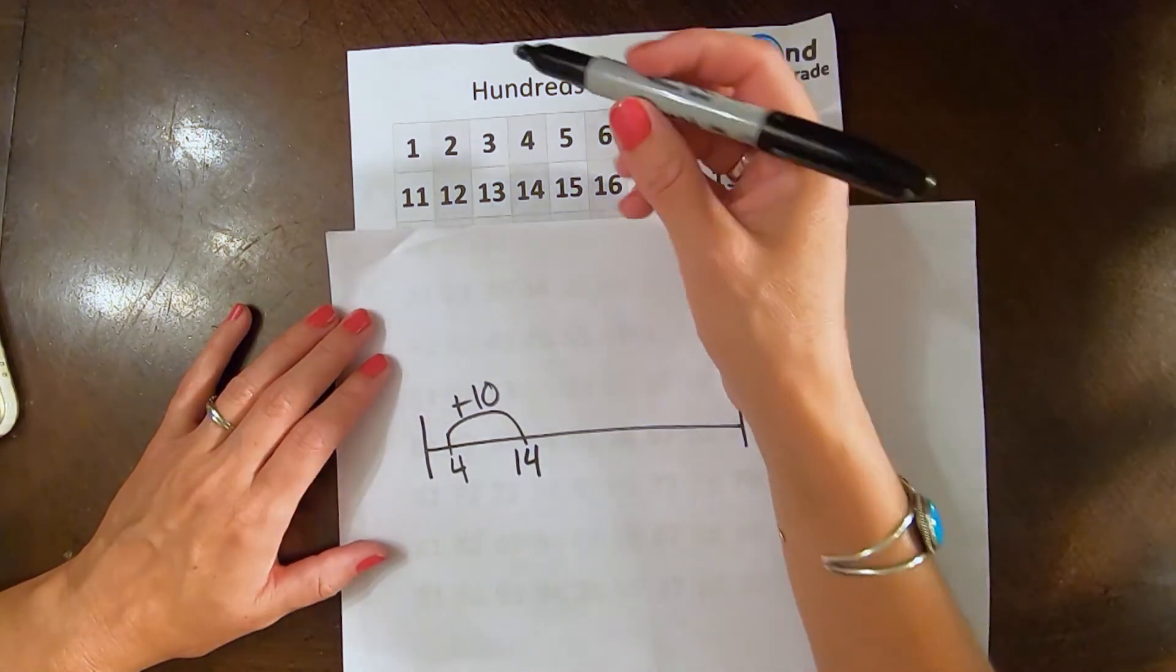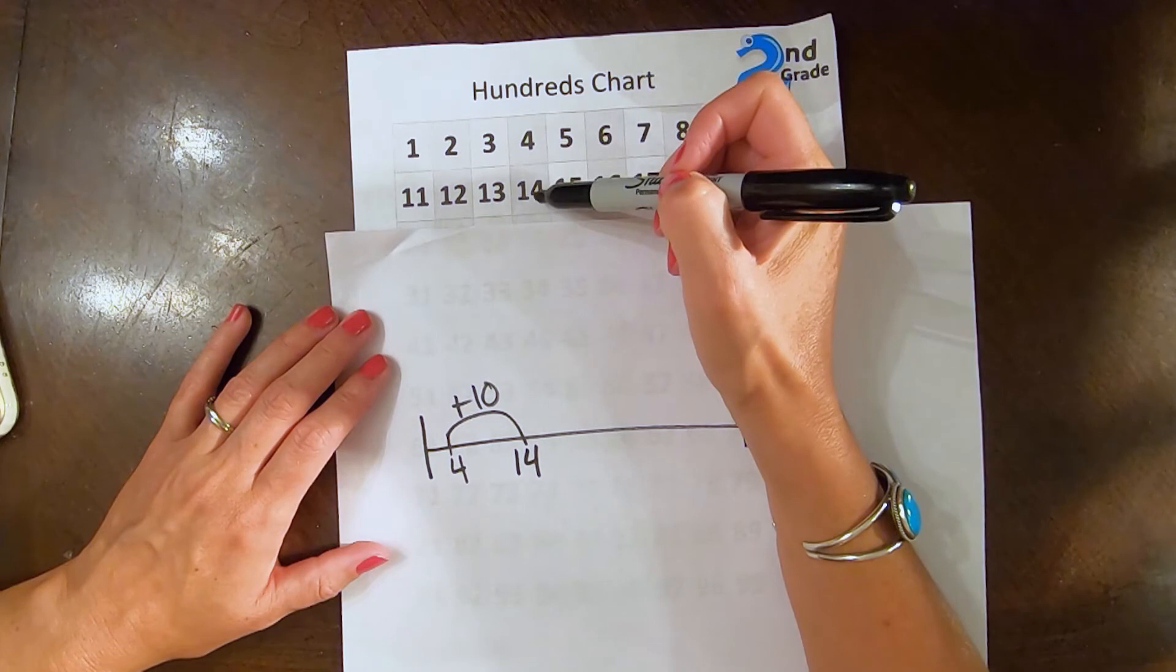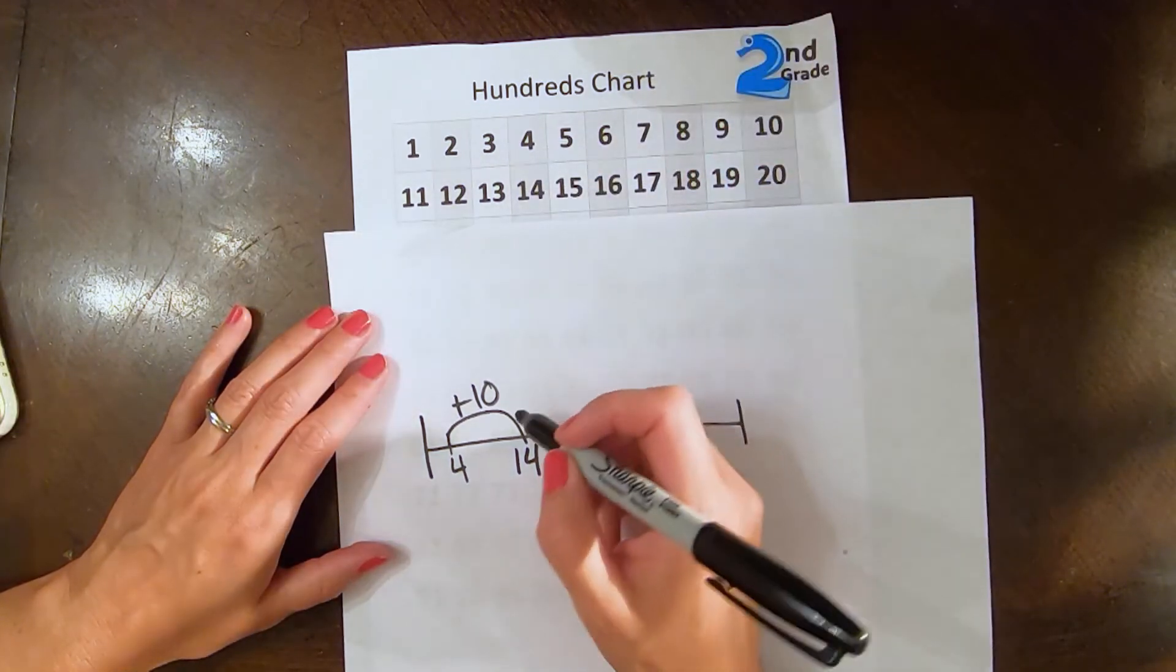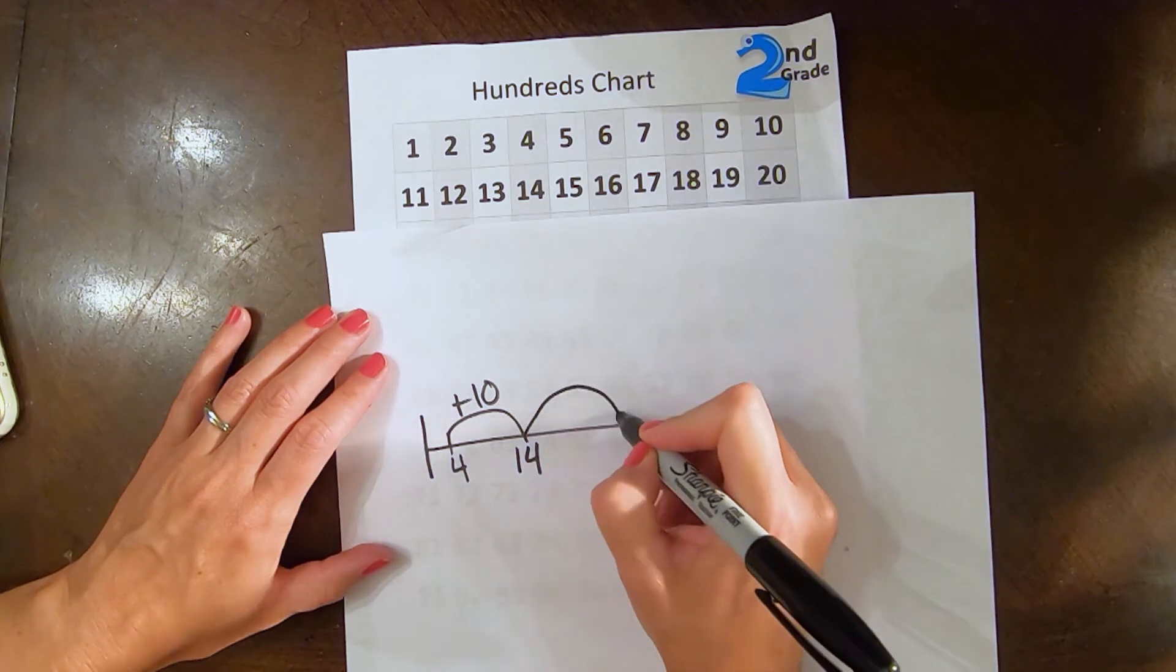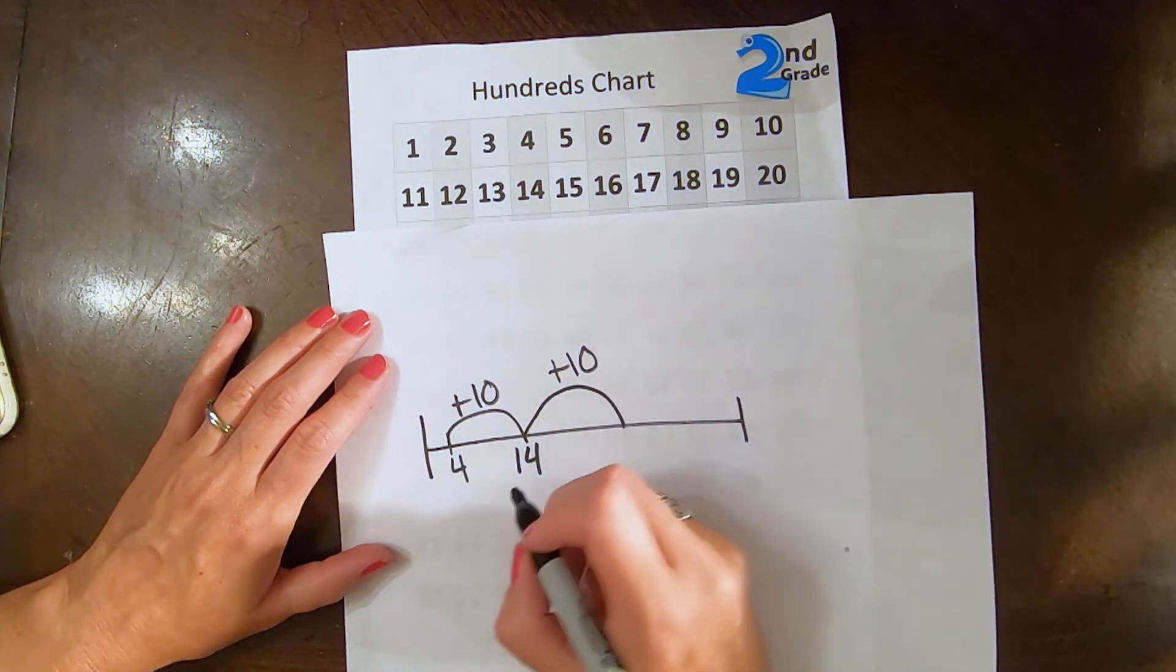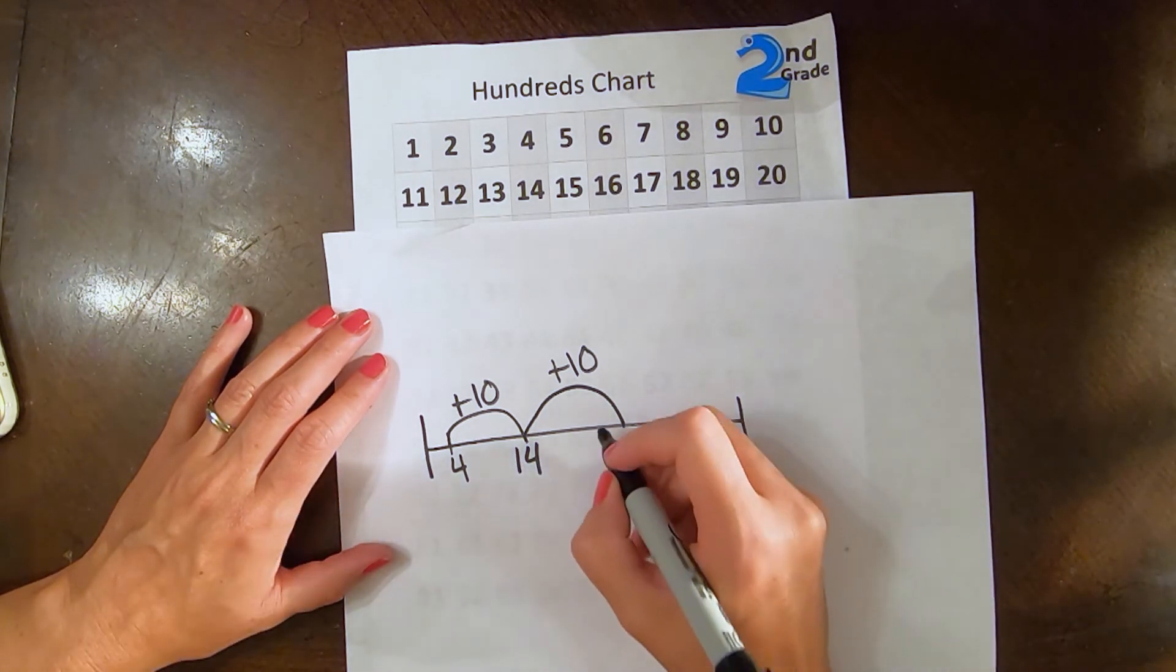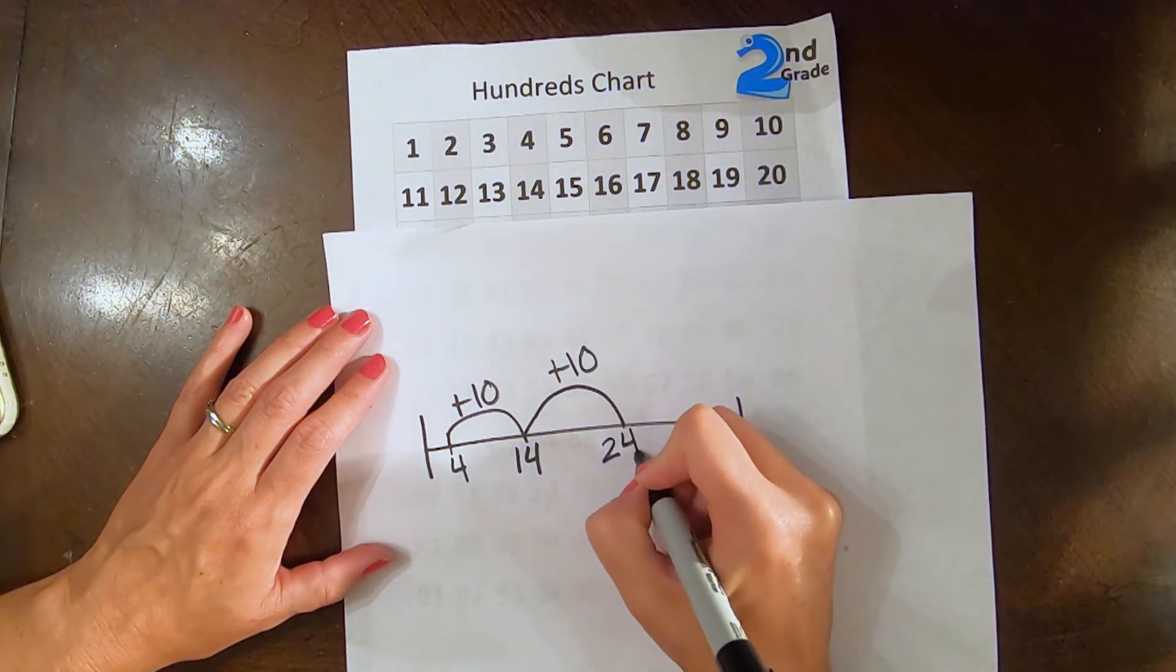Now again, I know that because we are adding 10, the 10 spot is going to have a 1. Now what happens if we add another 10 to our 14? Remember, the 10 spot is the only one that's changing, so it's going to go up by 1. So it's going to be 24.